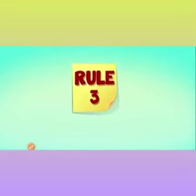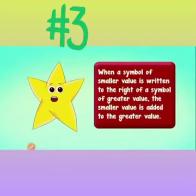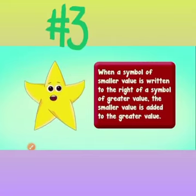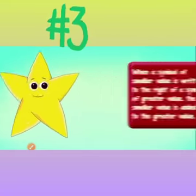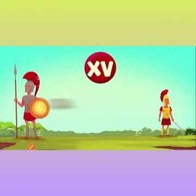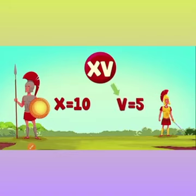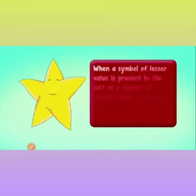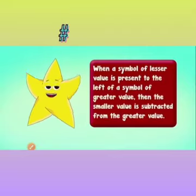Rule number 3: when a symbol of smaller value is written to the right of a symbol of greater value, the smaller value is added to the greater value. For example, XV — here X is 10 and V is 5. The smaller number 5 is written to the right of the greater number 10, so X plus V equals 10 plus 5 equals 15.